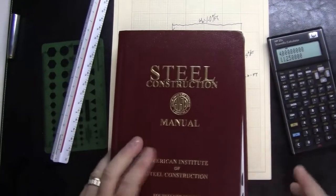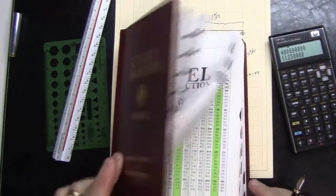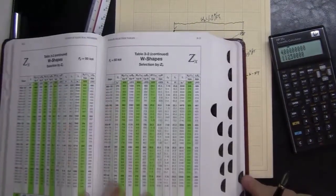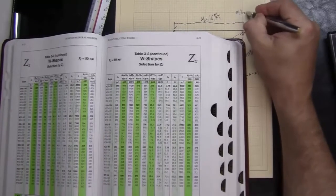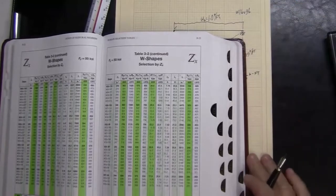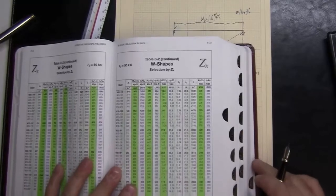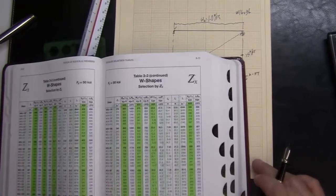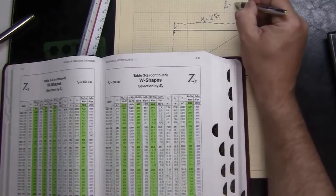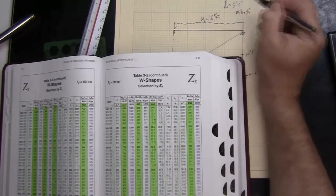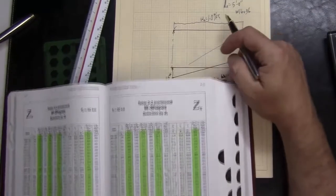When doing a quick preliminary check, I'm going to go to the steel manual and start looking at some of the sections. We said we were going to try a preliminary section of a W16 by 36. In looking at it, we also said that our unbraced length that we were going to shoot for was going to be five feet on center. And this has to do with the bar joist framing on top.